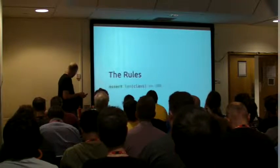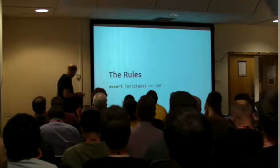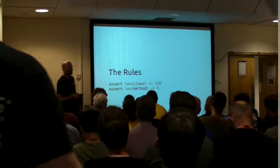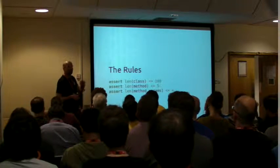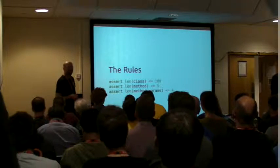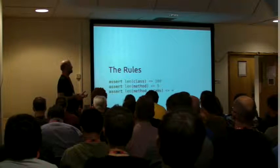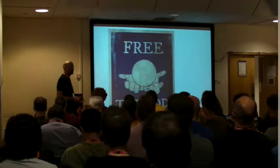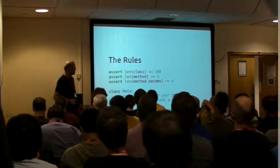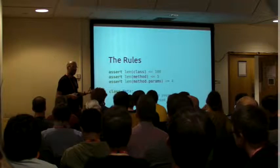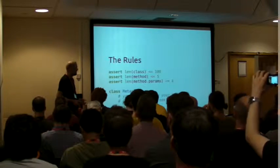The rules. First rule is that no class can have more than 100 lines. No method can have more than 5 lines. No method can have more than 4 parameters. You're not allowed to just pass in a dictionary. These rules feel pretty tight when you first hear them — it's kind of mental, it feels difficult.